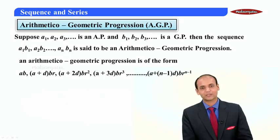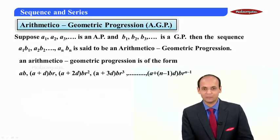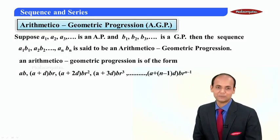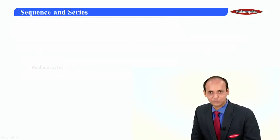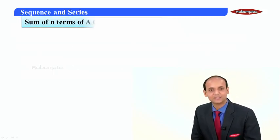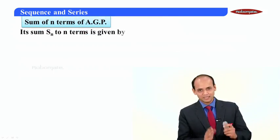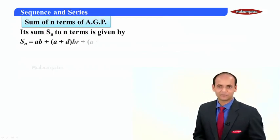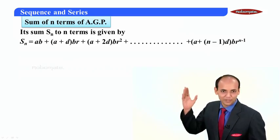Friends, you can see over here that the nth term of an AGP can be written as the multiplication of the nth term of an AP and the nth term of a GP. The most important concept here is to find the sum of n terms in AGP. Let us say I denote the sum of n terms in AGP by Sn.